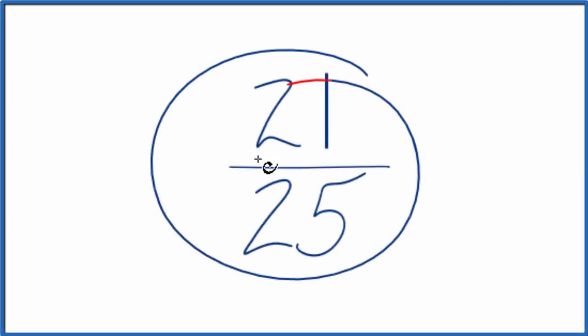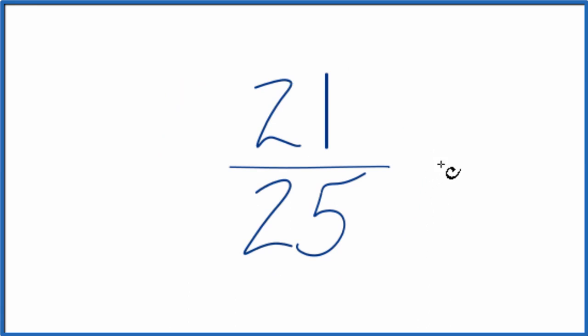Let's simplify the fraction 21 25ths. And here's how we'll do it. What we want to do is find a fraction that's equal to 21 over 25.